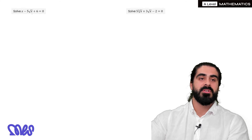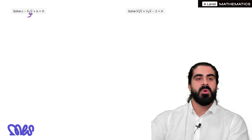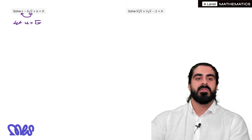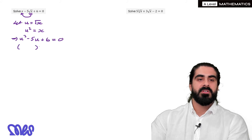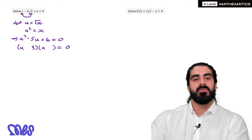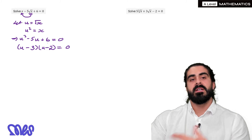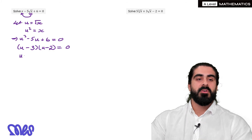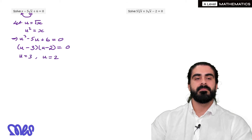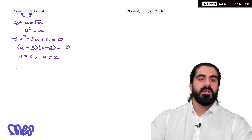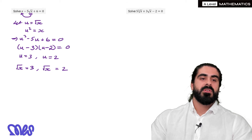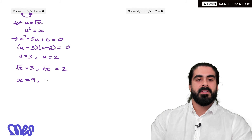Next example. It's a hidden quadratic because if you look at the middle term, root x — if we square that, we get x. We know root x times root x is x. So what we'd do is let u equal root x, then u squared would equal x. So we can rewrite this and factorize. We use 3 and 2 — both must be minus. So we get u equals 3 and u equals 2. Don't forget we let u equal root x, so root x equals 3 and root x equals 2. Squaring both sides, we get x equals 9 and x equals 4.